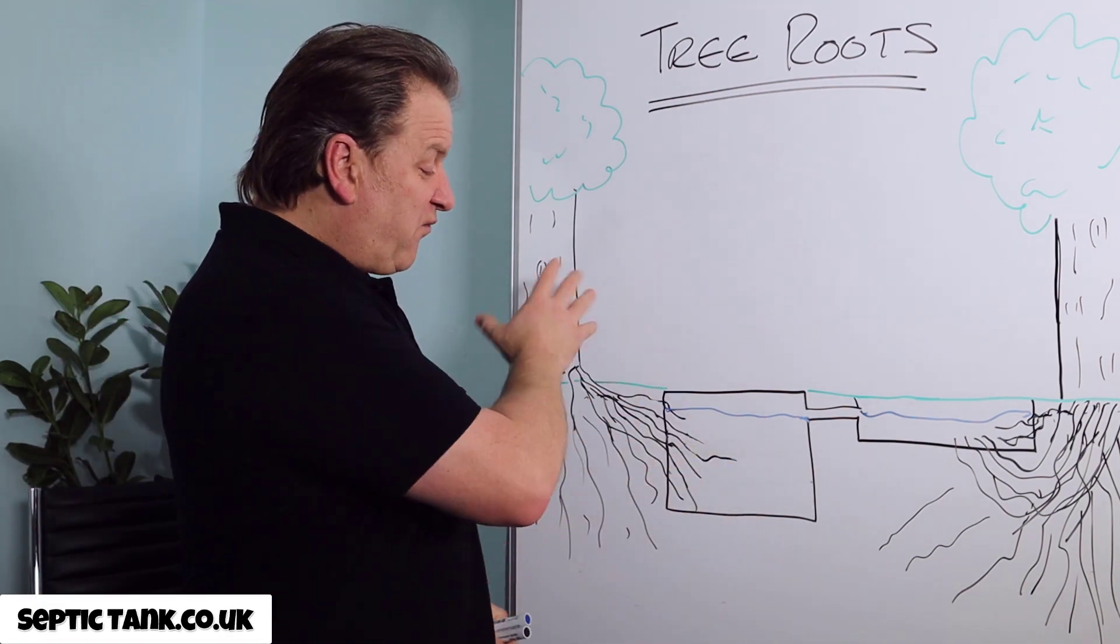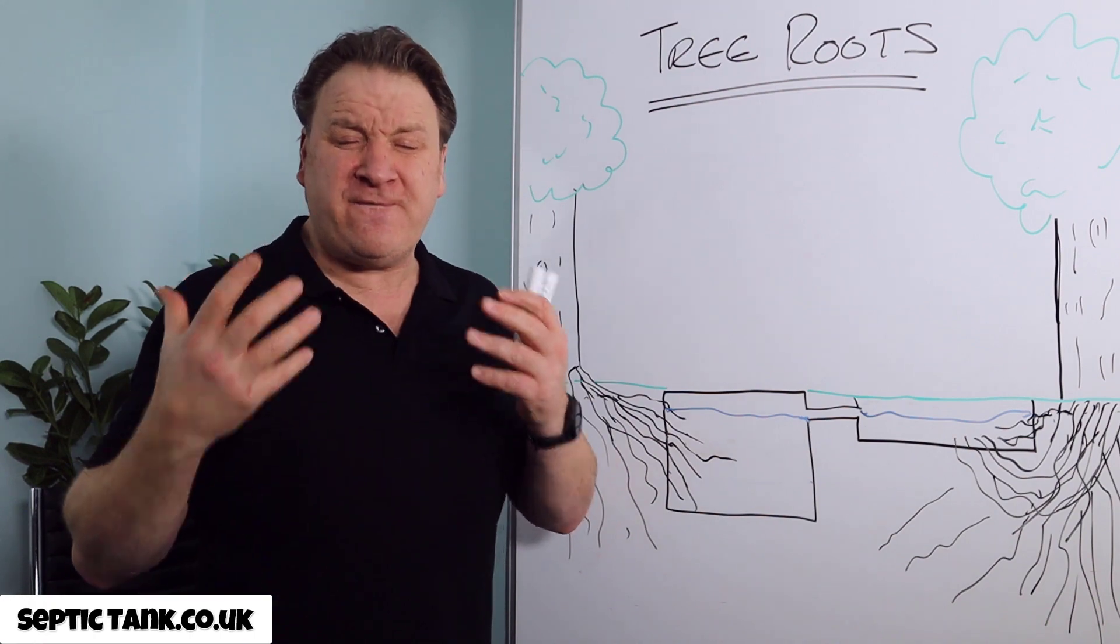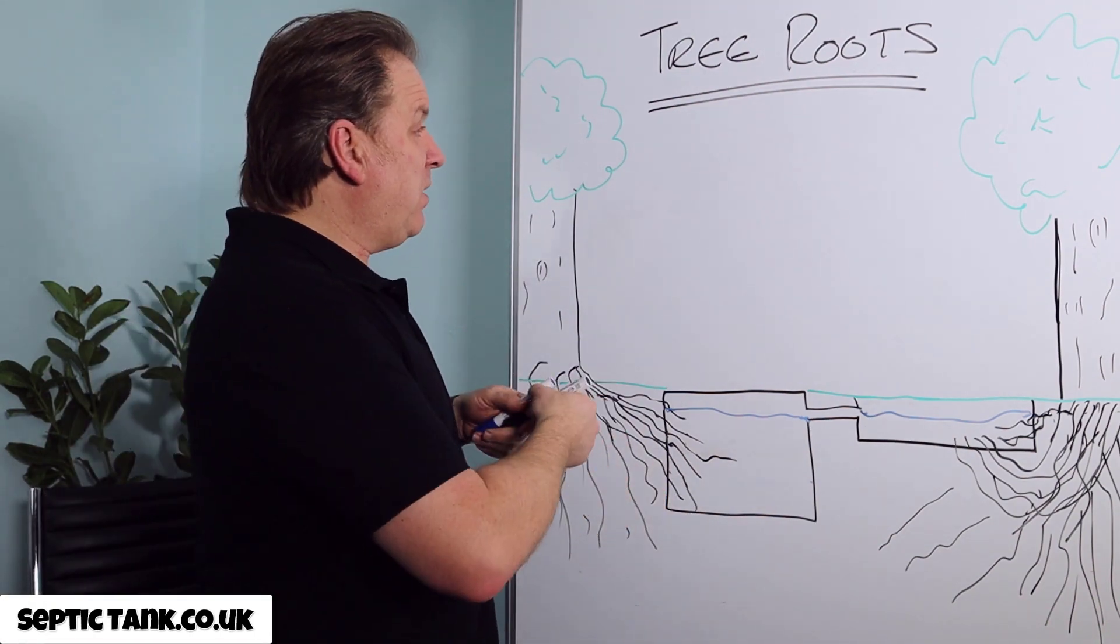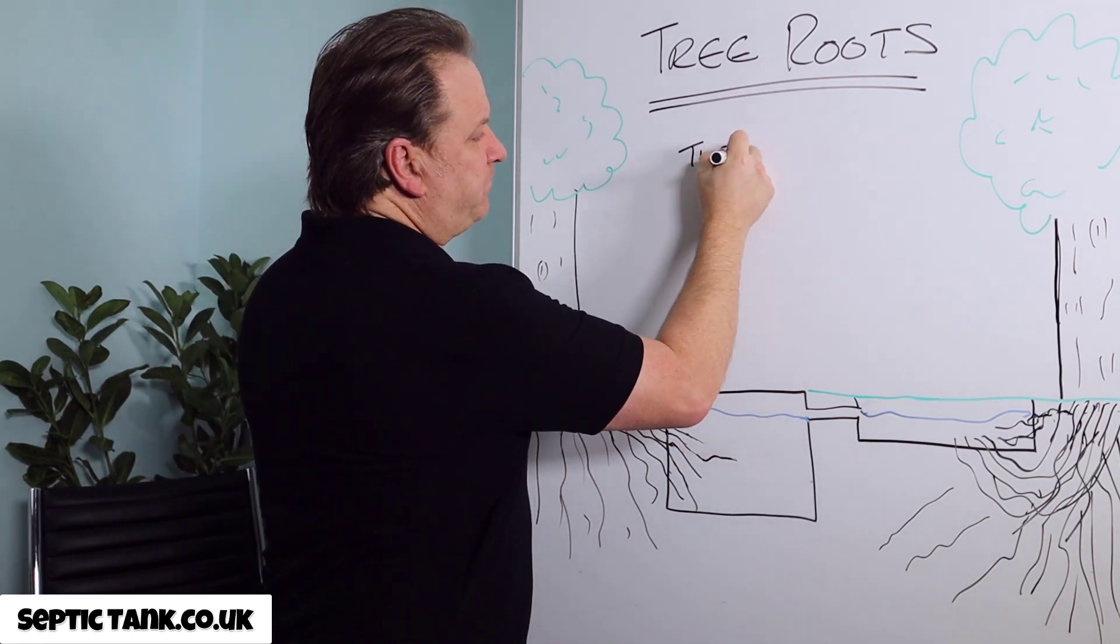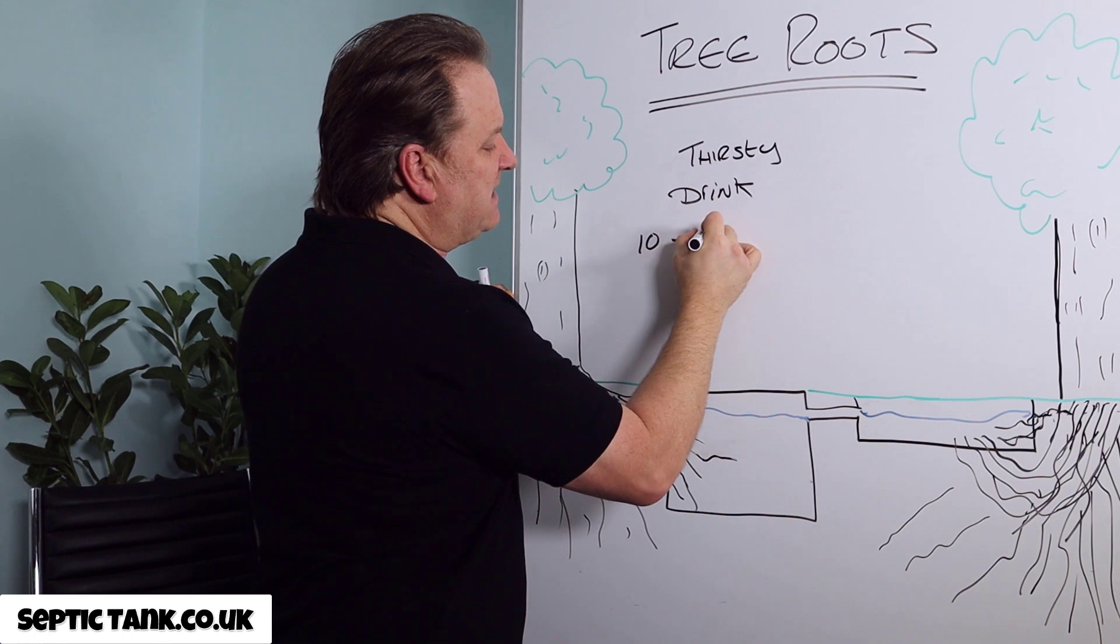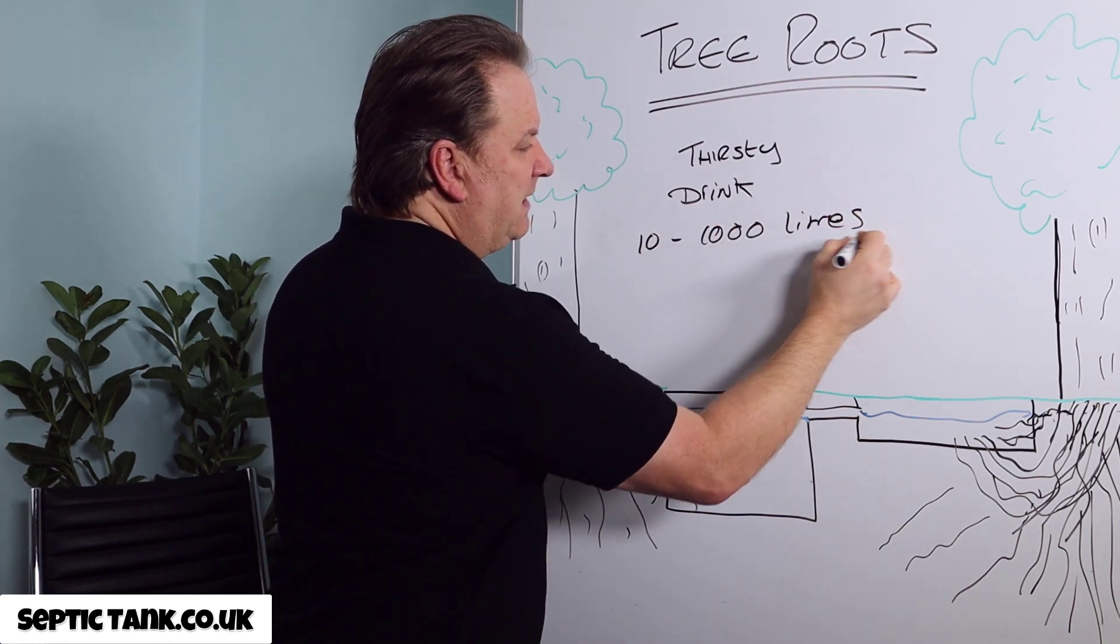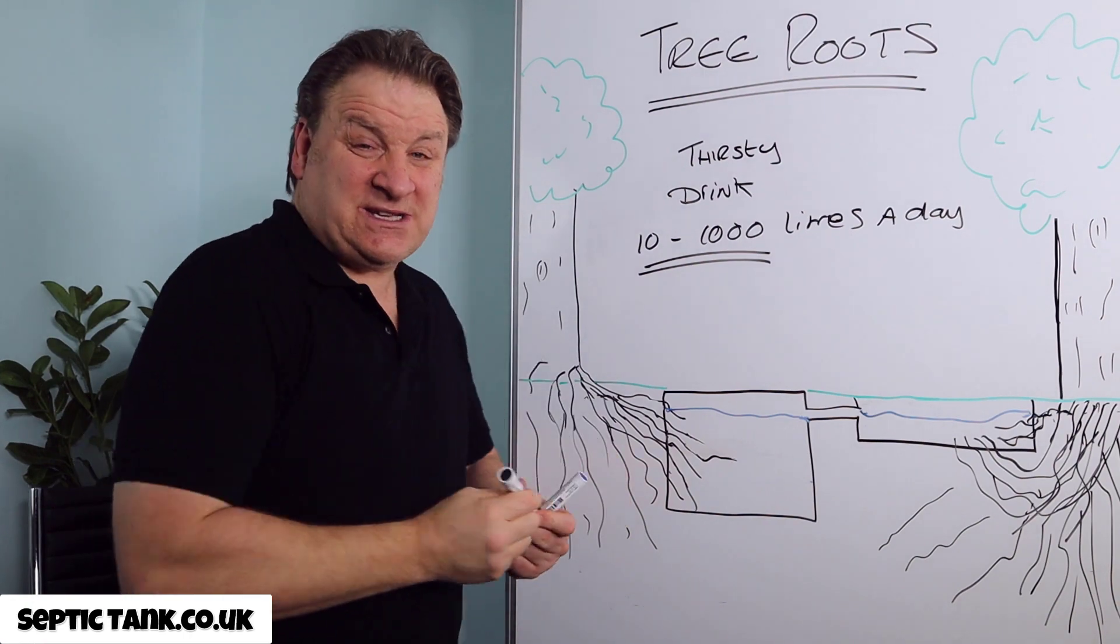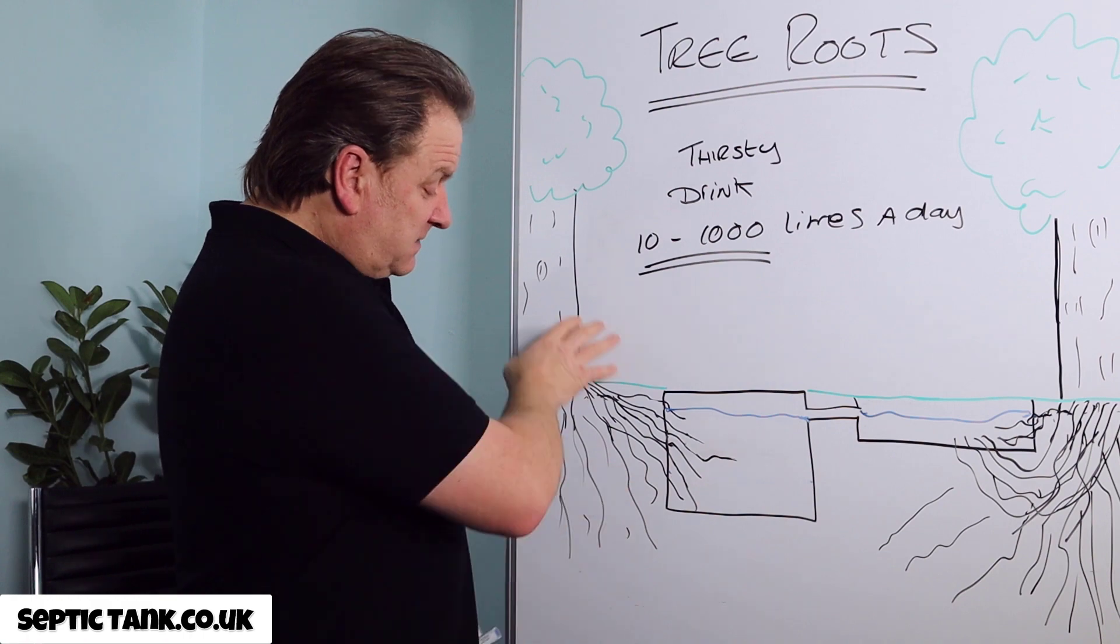The pros of having trees and tree roots and shrubs near your drainage field. Well, let me show you. Trees like humans are very, very thirsty things. Humans drink about eight litres a day. Now a tree, trees are very thirsty. And they drink anywhere from 10 to a thousand litres a day.